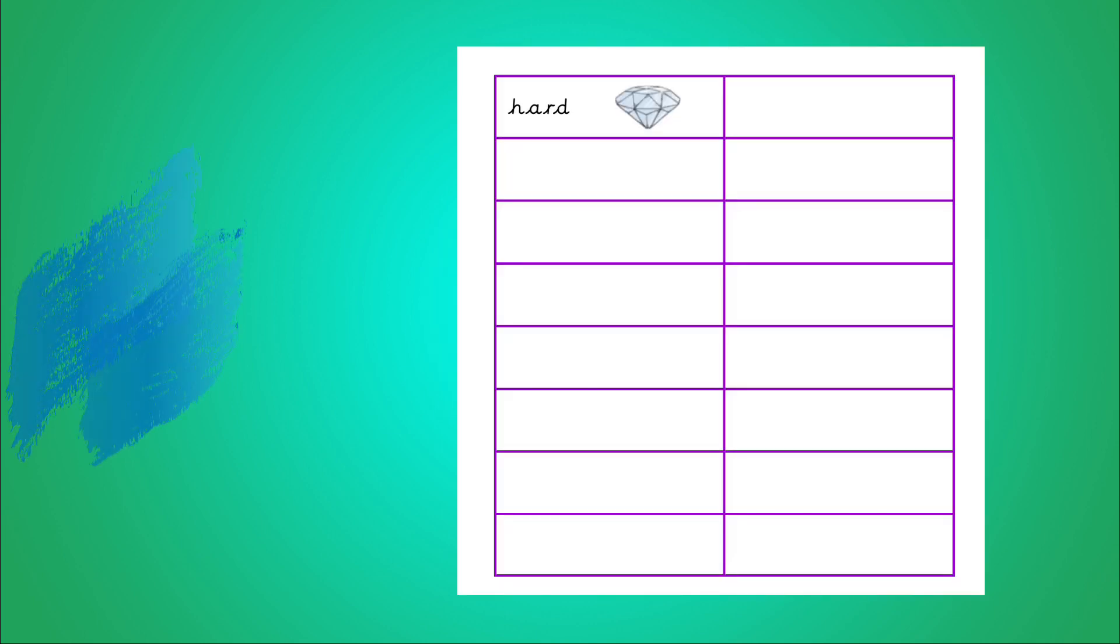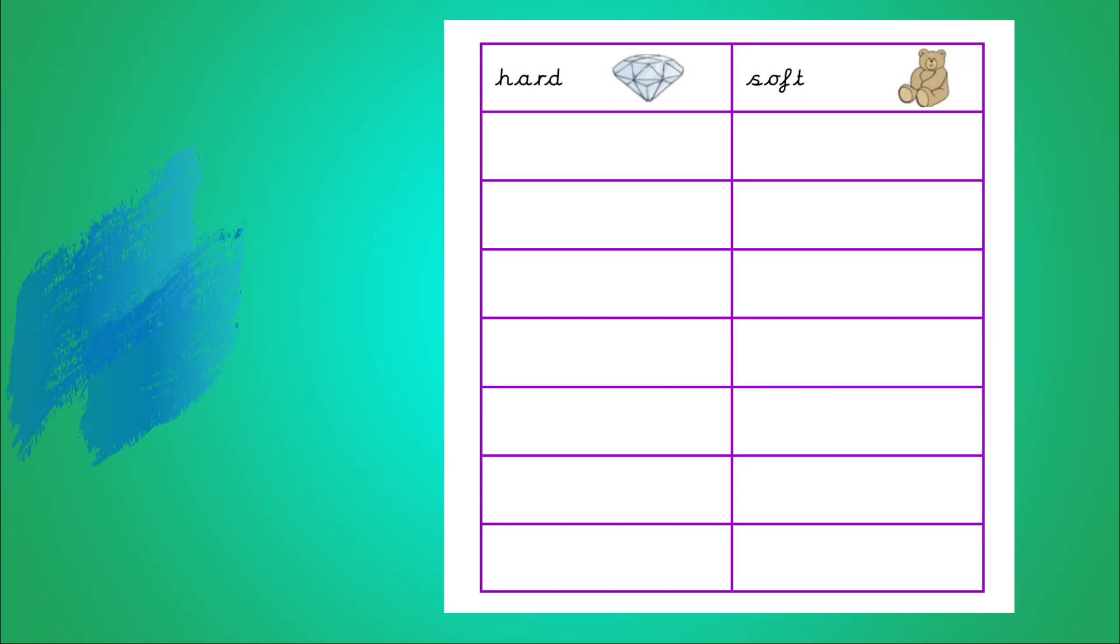Hard. Like a diamond. The opposite of hard is soft. Like a teddy bear.